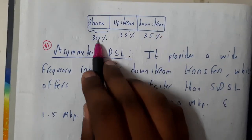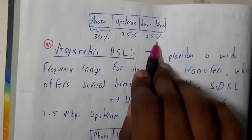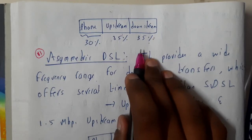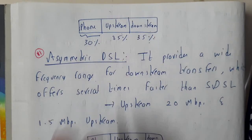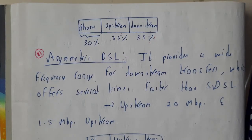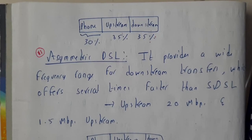It will be divided in this way: phone, upstream, downstream — 30, 35, 35. I hope everyone got a small idea. In the next tutorial we'll be going through Asynchronous DSL. Thank you, thanks for watching.